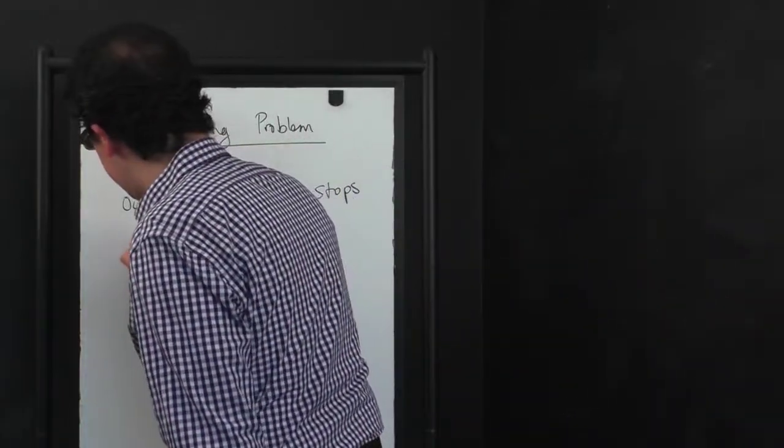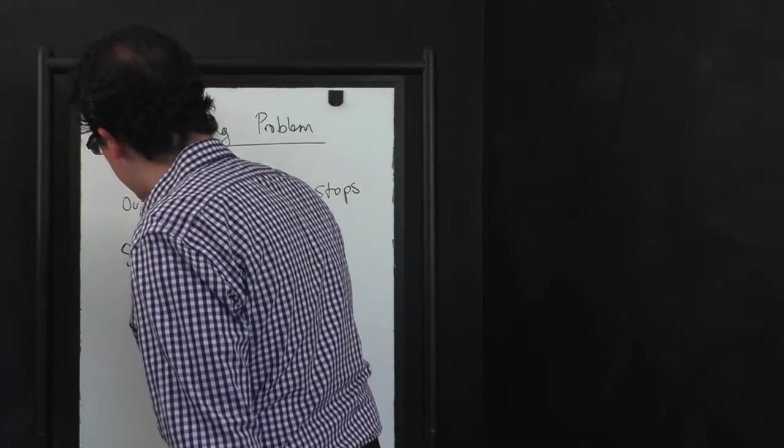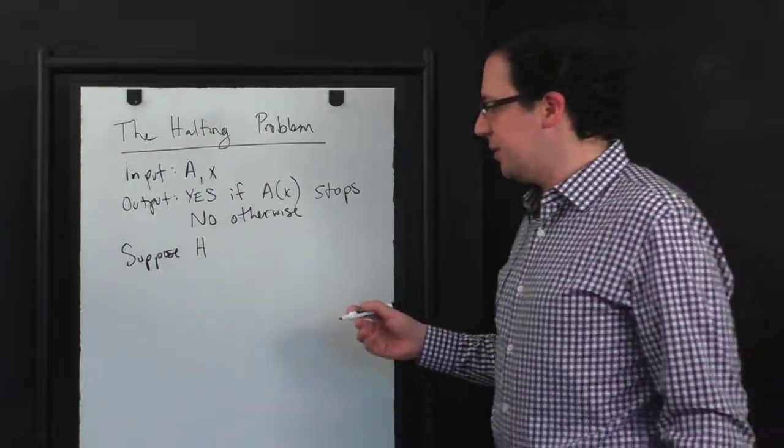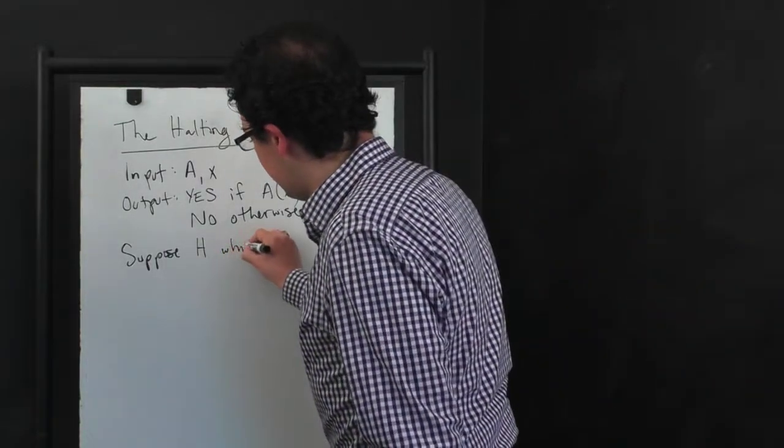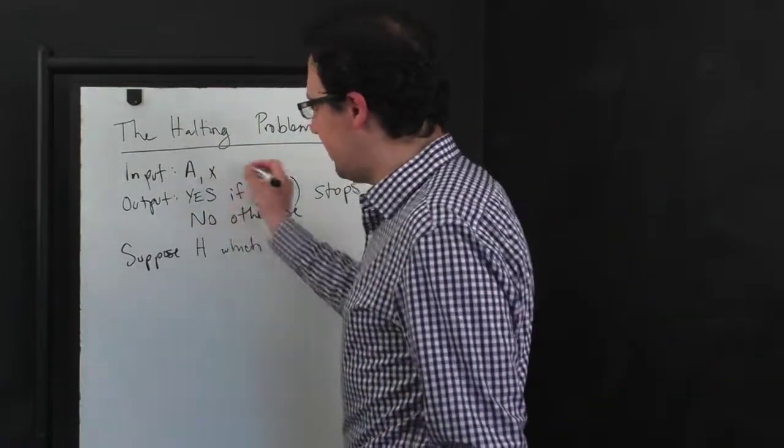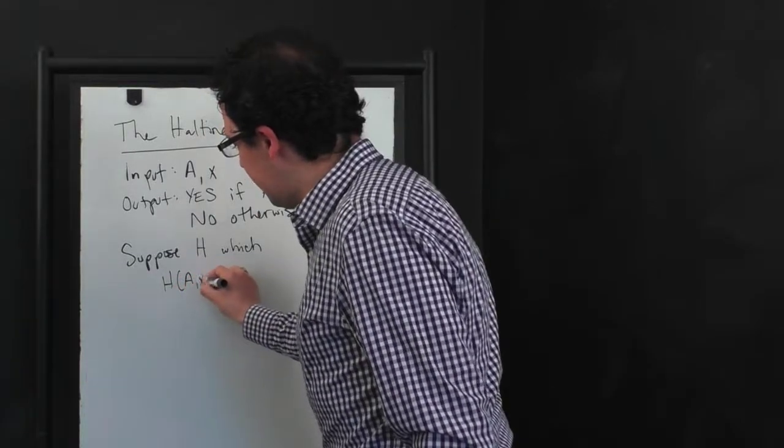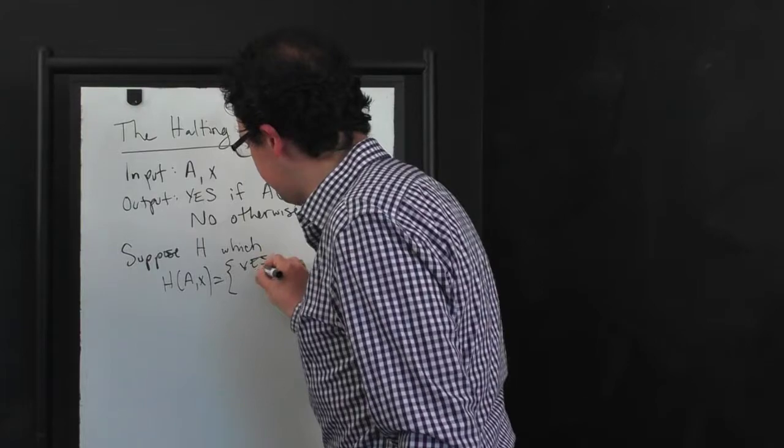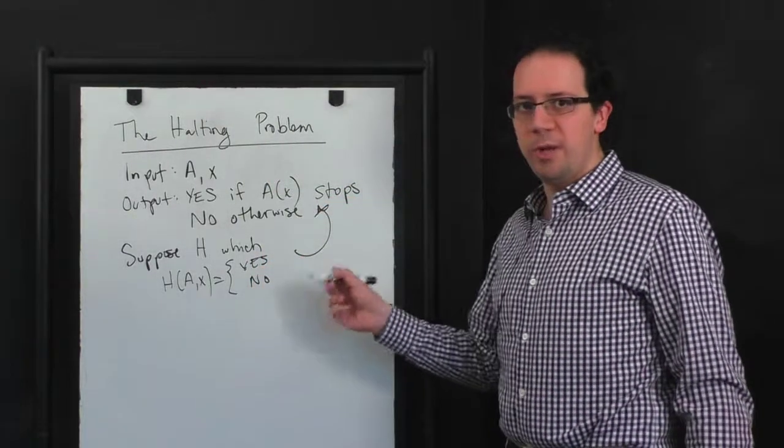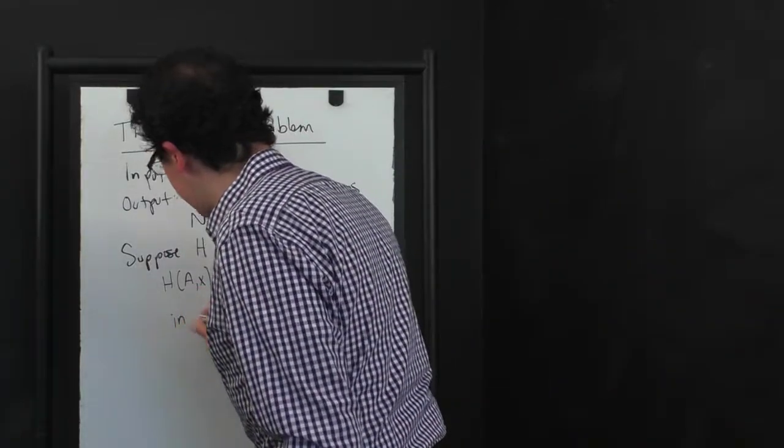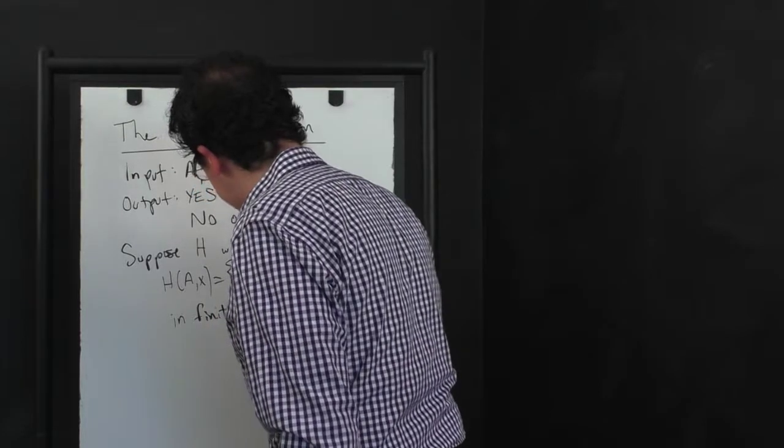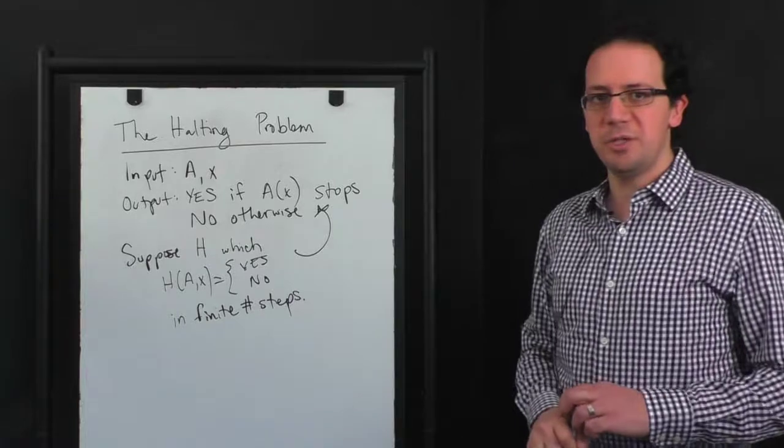So suppose that there were a solution to this problem. So suppose H is itself an algorithm which correctly solves the halting problem. Meaning that when you give it A and X, it outputs yes or no according to the halting problem. And we want H itself to always halt. So it makes this output in a finite number of steps. And this consideration is pretty crucial.